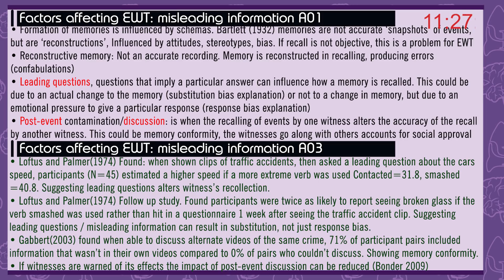Gabbert in 2003 found that when able to discuss alternate videos of the same crime, 71% of participant pairs included information that wasn't in their own video, compared to 0% of pairs who couldn't discuss, showing memory conformity. If witnesses are warned of its effects, the impact of post-event discussion can be reduced — Utter, 2009.